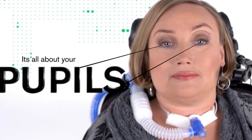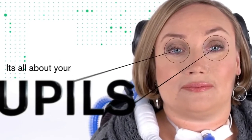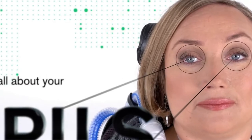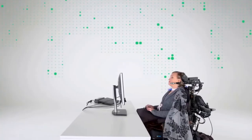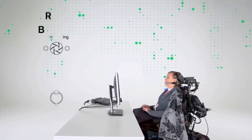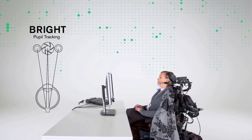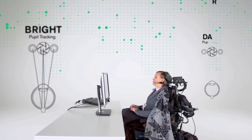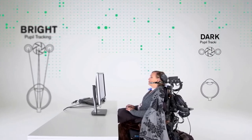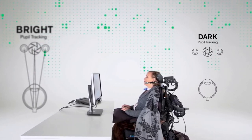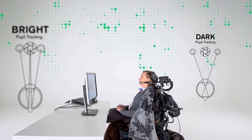For accurate eye tracking, the eye tracker needs to find your pupils. This can be done through either bright or dark pupil tracking. Bright pupil tracking works similarly to when you get red eyes using a compact camera with a flash. By placing the flash, or in this case the illuminators, farther away from the lens, you can avoid this. This is dark pupil tracking.